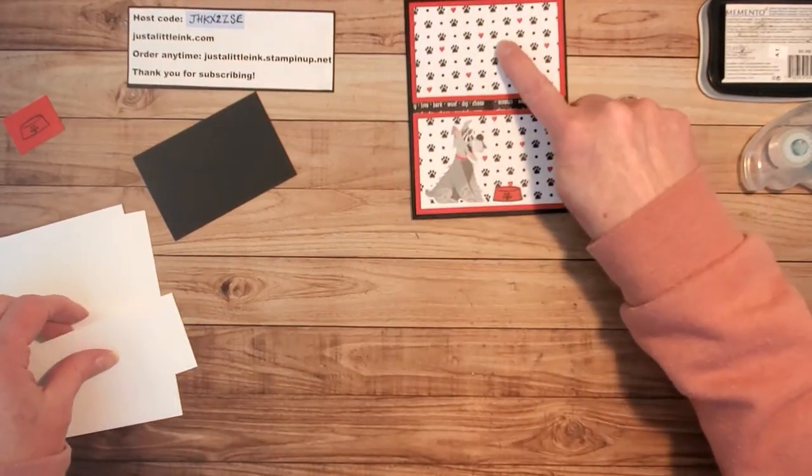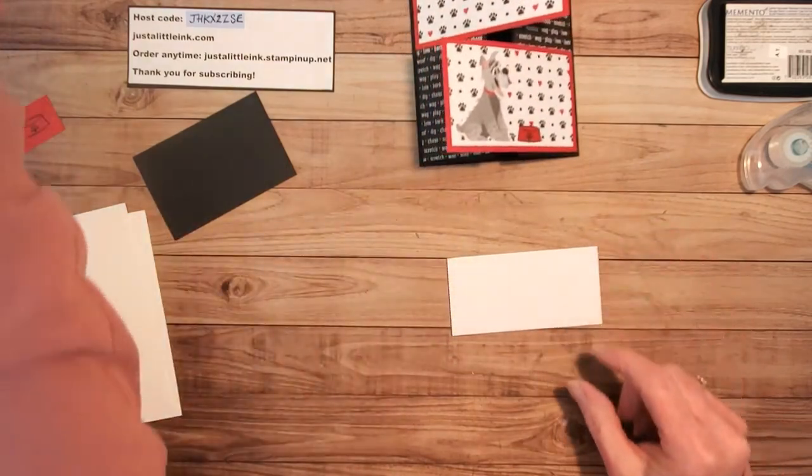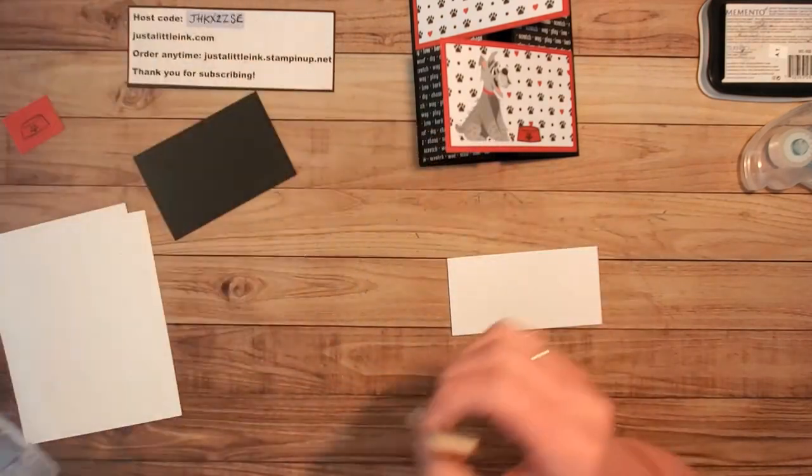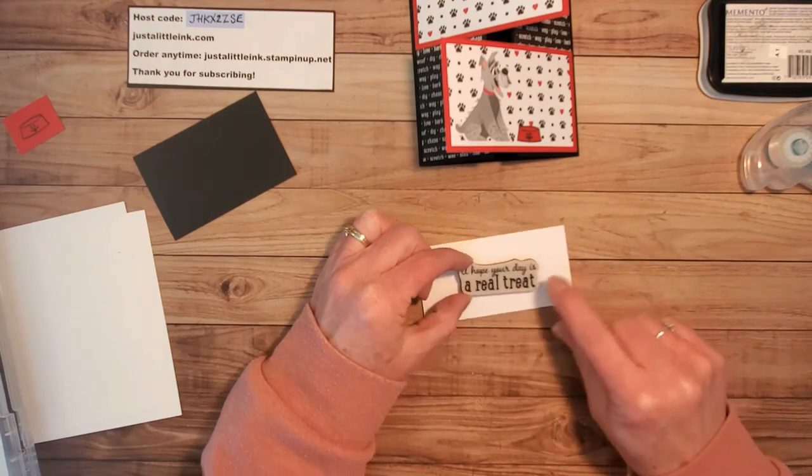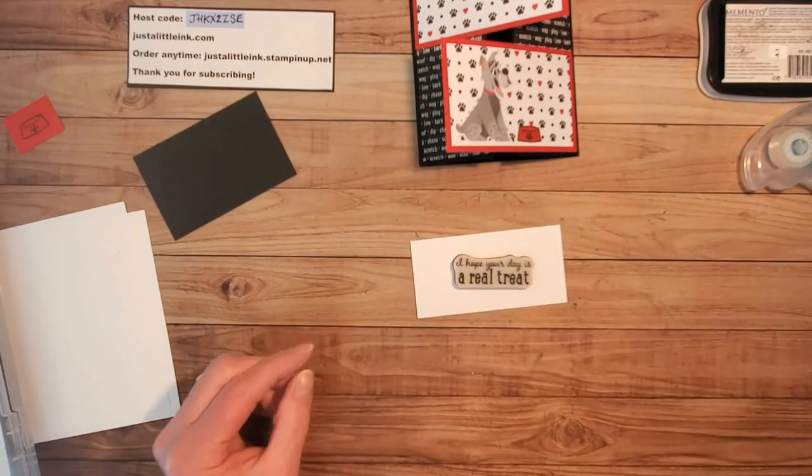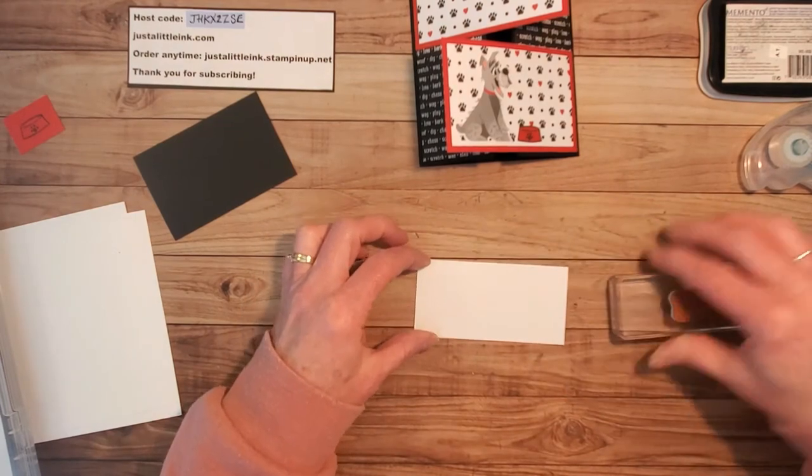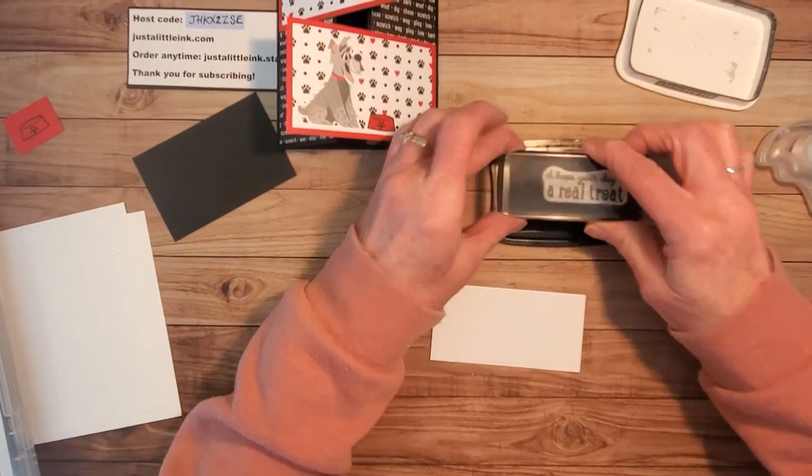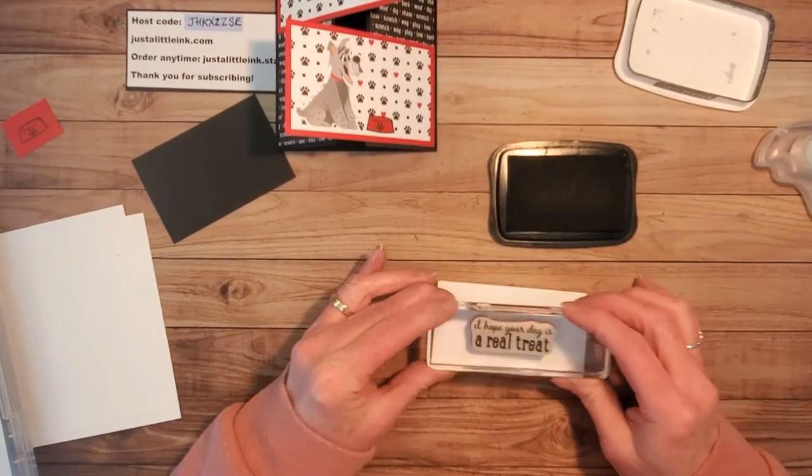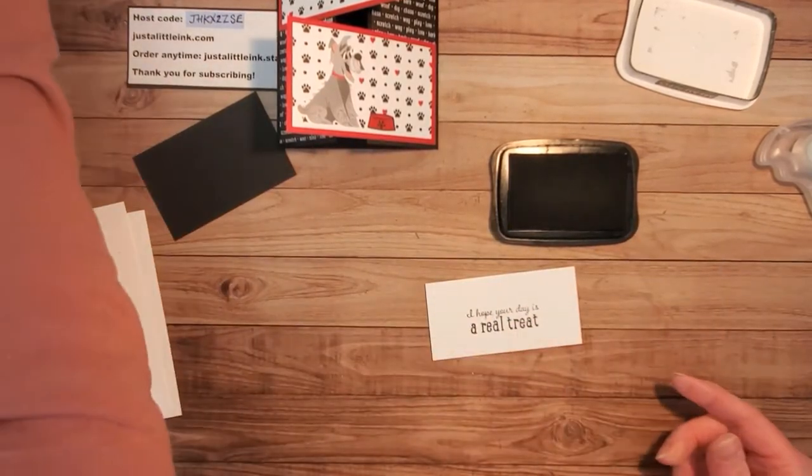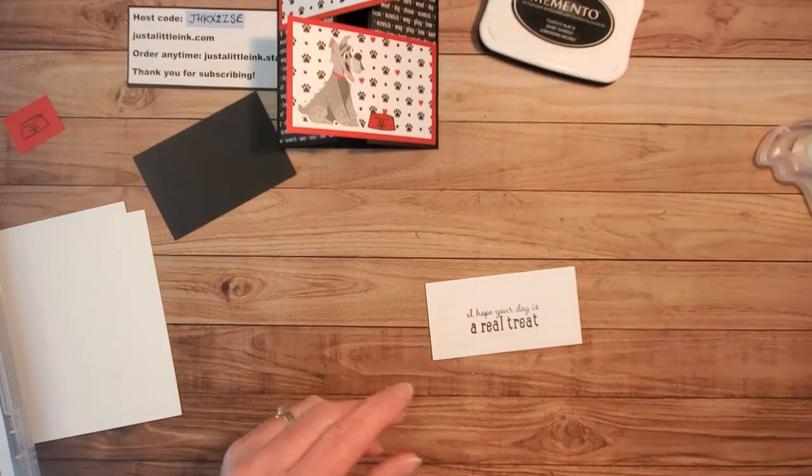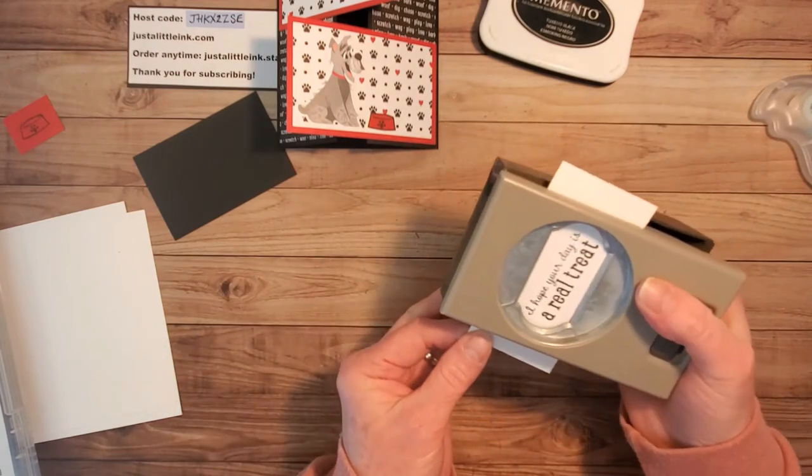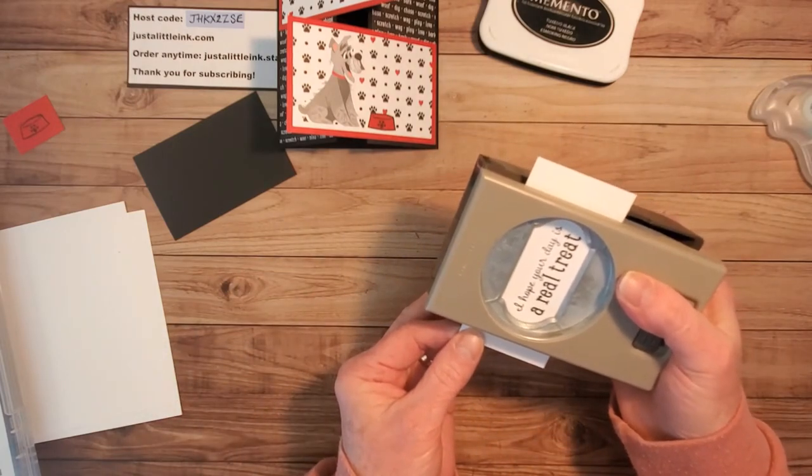Then I need my greeting for the front. I need the one that says I hope your day is a real treat. So we'll line it up and I'm going to stamp it again with the memento ink. I just want a nice black ink and it's needed on a piece of scrap big enough for this image. I'm going to cut it out using the timeless label punch. I liked the shape of it; it fits in here really well.